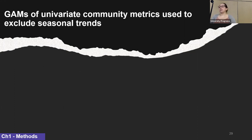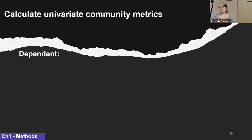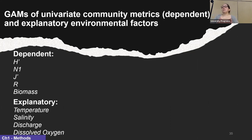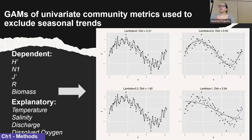There is regular short-term variation in necton communities coinciding with natural environmental fluctuations from seasonal variation in freshwater inflow pulses. The focus of this chapter is looking beyond this at the long-term trends. To do this, I need to first identify that regular variation and account for it. I'll first calculate univariate community metrics including the Shannon-Weaver diversity index, Hills N1, J-prime evenness, species richness, and biomass. These will be fed into a generalized additive model using environmental factors — temperature, salinity, discharge, and dissolved oxygen — as explanatory variables.